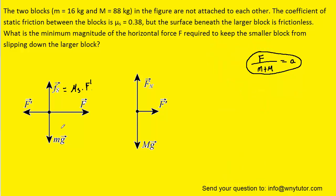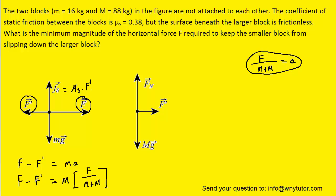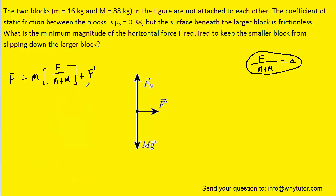We next apply Newton's second law in the x direction to the smaller block. In the x direction we have the positive applied force F and the negative reaction force F prime, equal to mass times acceleration. We substitute the expression for acceleration we just found, then rearrange by adding F prime to the right-hand side. We hold on to this Newton's second law equation for the smaller block in the x direction.